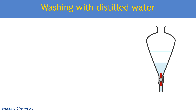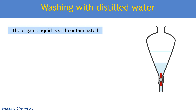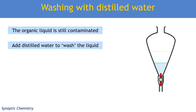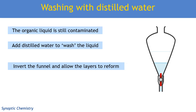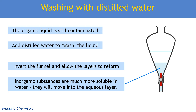You've now neutralised the acid, but your liquid is still going to be contaminated. There's going to be excess base and also salt from the neutralisation reaction. So you now wash your organic liquid — add distilled water, invert the flask to mix the liquids together, then allow the layers to reform again. Any inorganic substances such as excess sodium carbonate or the salt from neutralisation will be extremely soluble in water and much more soluble than they are in the organic liquid, so they will move into the aqueous layer. As before, open the tap and remove the aqueous layer. You may need to do this a couple of times.